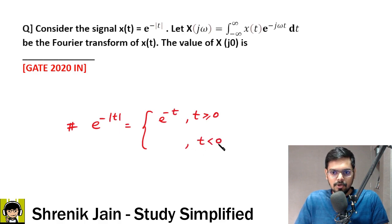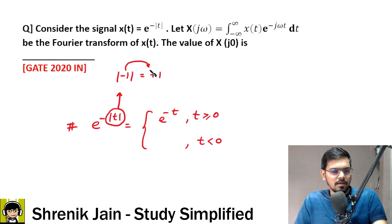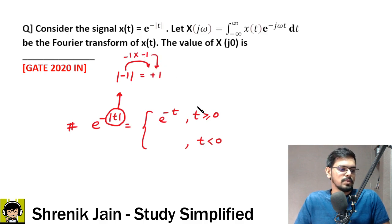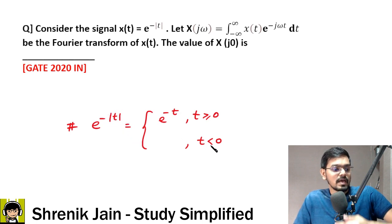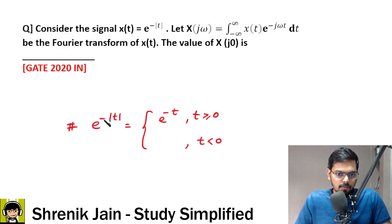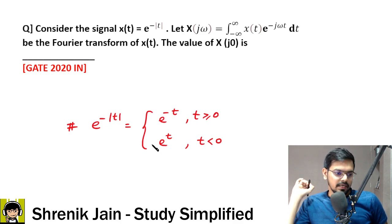When t is less than 0, be cautious — mod is a motivational player. For example, mod of minus 1 gives plus 1; you achieve this by placing a minus sign outside. Similarly, mod t in the negative range behaves as minus t. So with the minus outside, e to the power minus mod t becomes e to the power positive t. If this part is not clear, you will not be able to solve the integration properly.